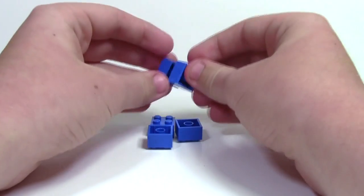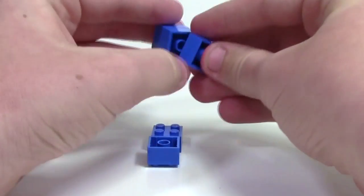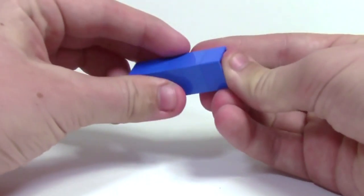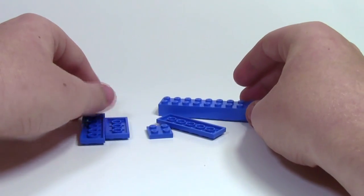Set that off to the side and gather five 2x2 bricks and just stack them on top of each other. Set that off to the side as well and gather the rest of the parts you need to make the base.